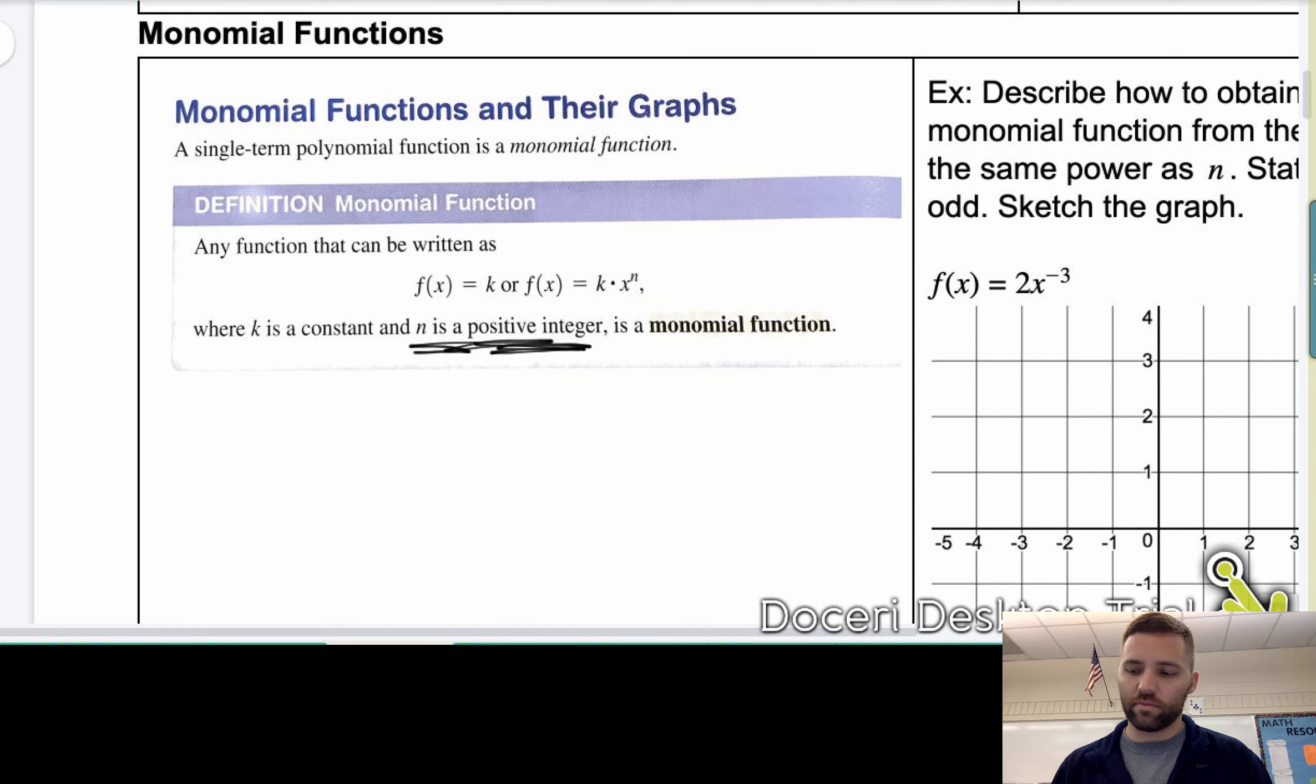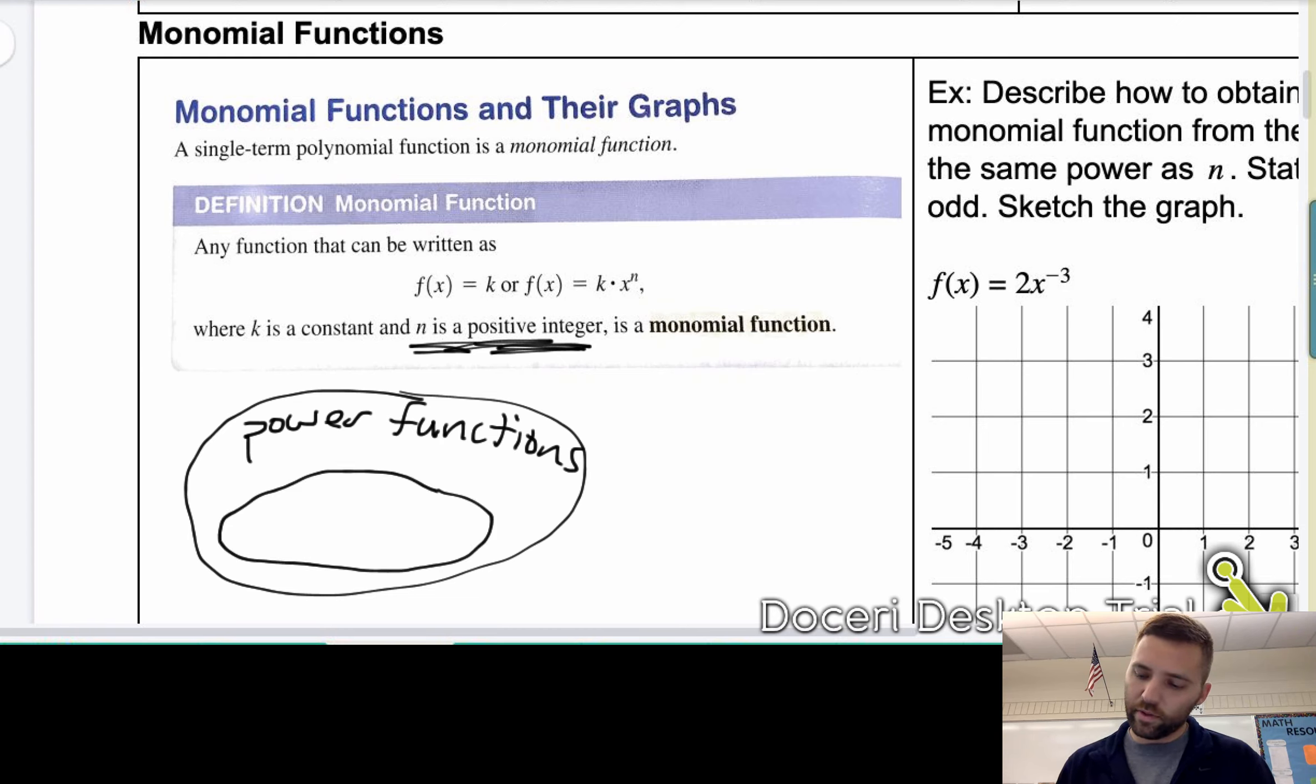So just to give you some perspective here, if we had the set of all, I'm going to draw a Venn diagram here. Okay. So suppose we had the set of all power functions. Inside the set of all power functions is this smaller set, which is the set of all monomials. Okay. So the monomials are a subset of the power functions.